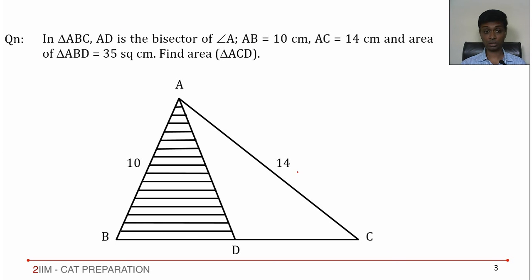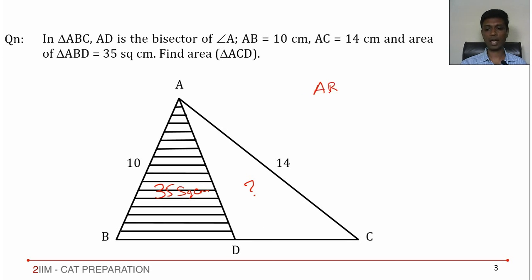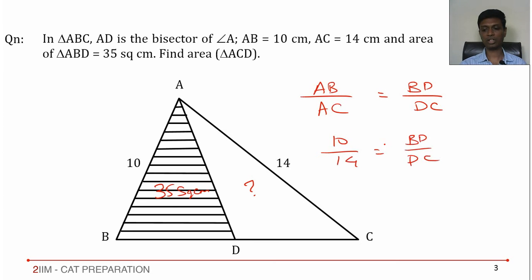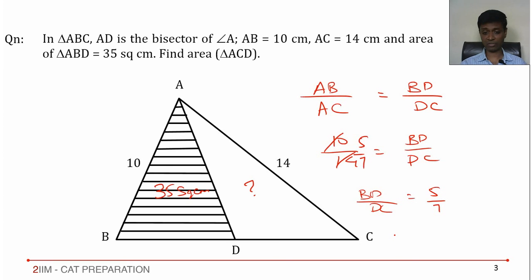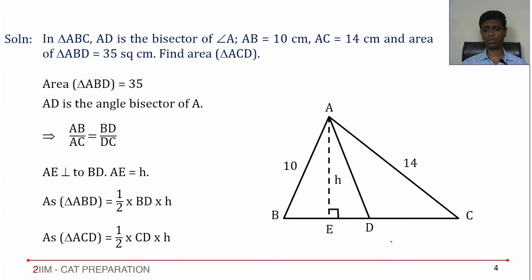The area of triangle ABD is 35 square centimeters. Find the area of triangle ACD. Again, we have an angle bisector, so we apply the angle bisector theorem: AB/AC = BD/DC, giving 10/14 = BD/DC, or BD/DC = 5/7. Hold on to that — we'll build on this.